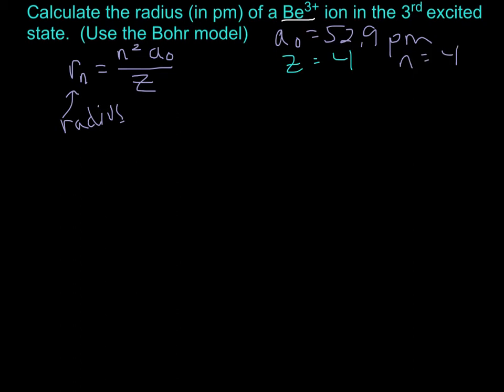Let's go ahead and do that. The radius of this beryllium ion in the n equals 4 level - the radius of this orbit is 4 squared times a₀, which is 52.9 picometers, over 4. Let's fill in 4 squared, 52.9 picometers - notice those are the only units in the problem.